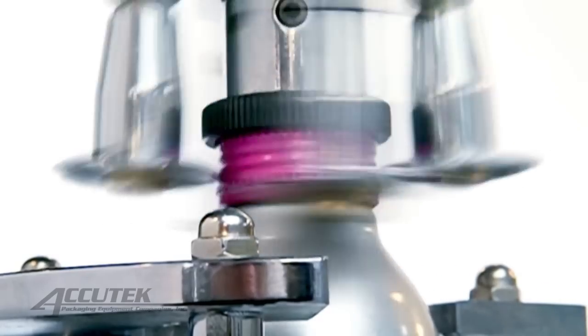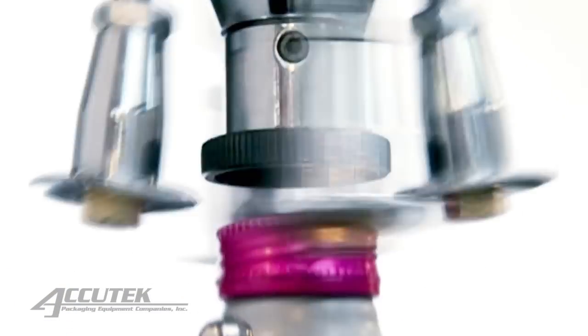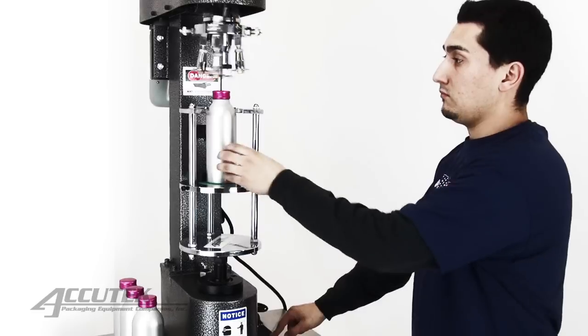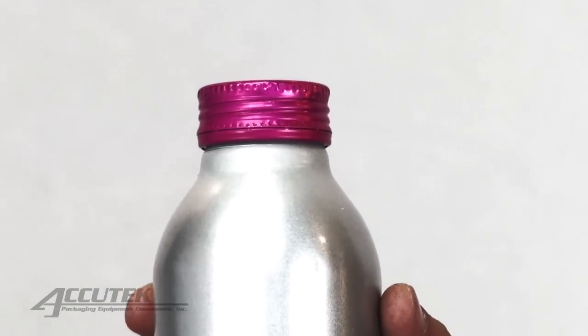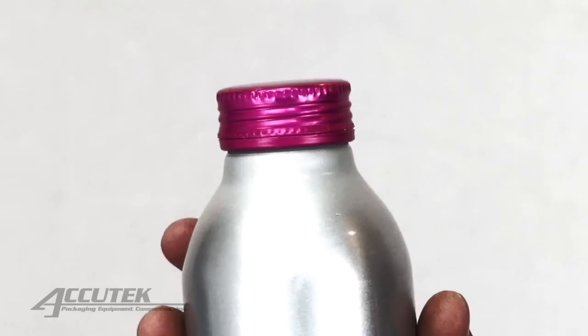The capping head of the ROPP capper can be adjusted for an assortment of container shapes, diameters, and heights. For more information on semi-automatic capping systems and thousands of other bottling and packaging solutions, visit www.accutekpackaging.com.